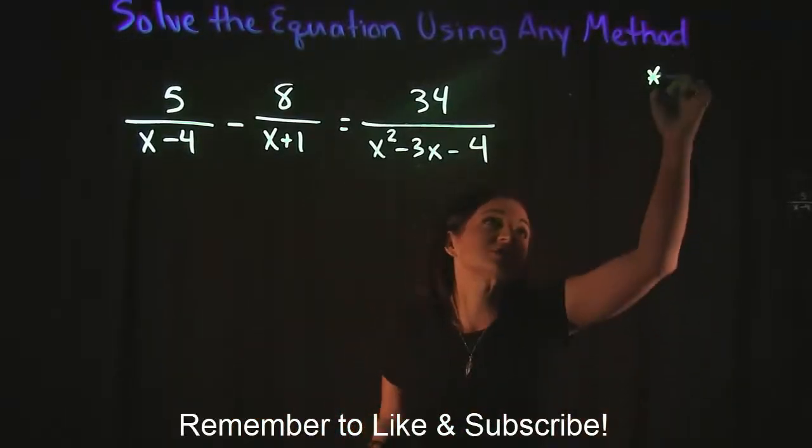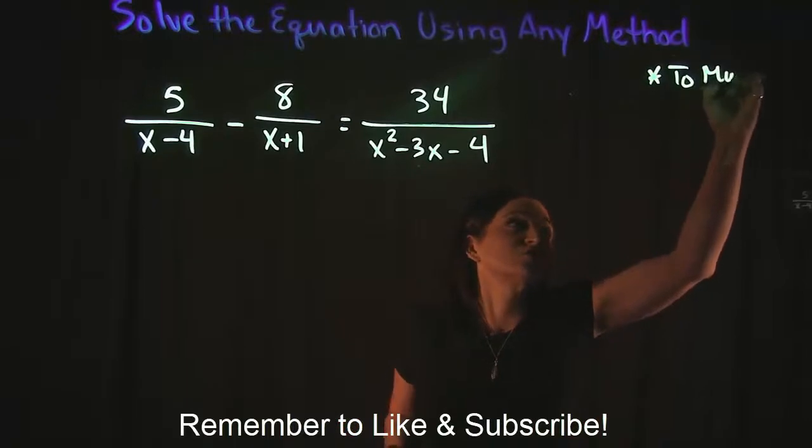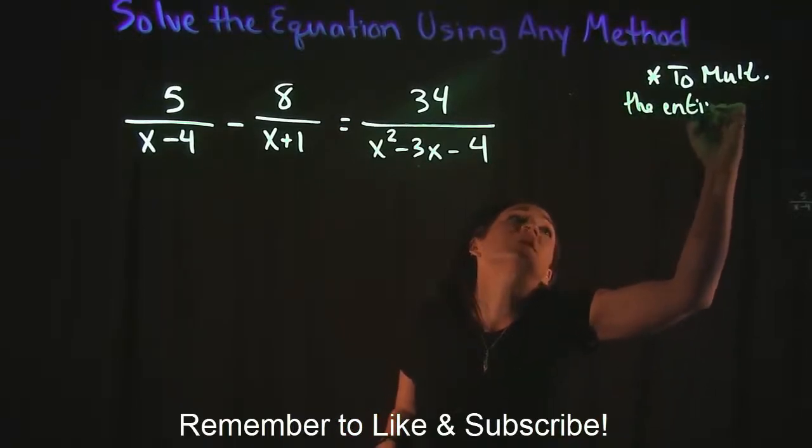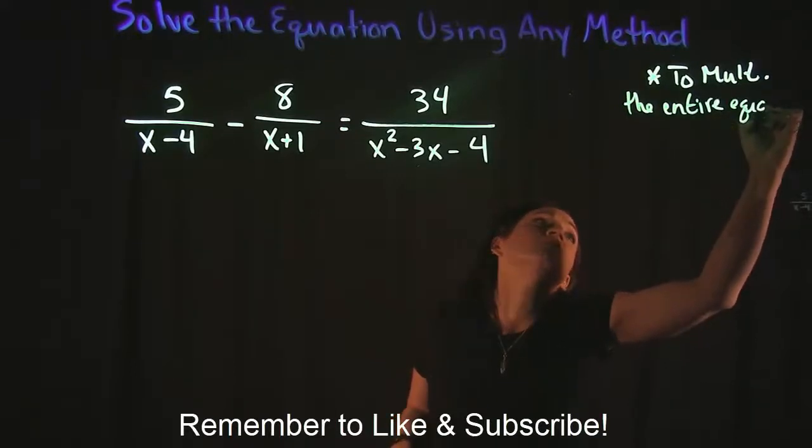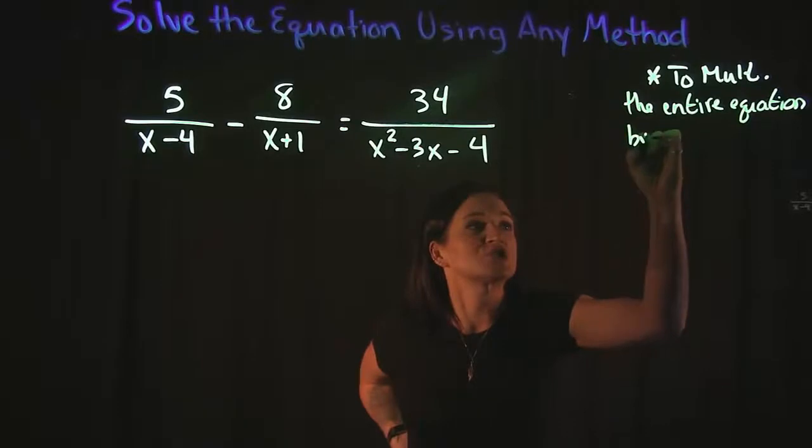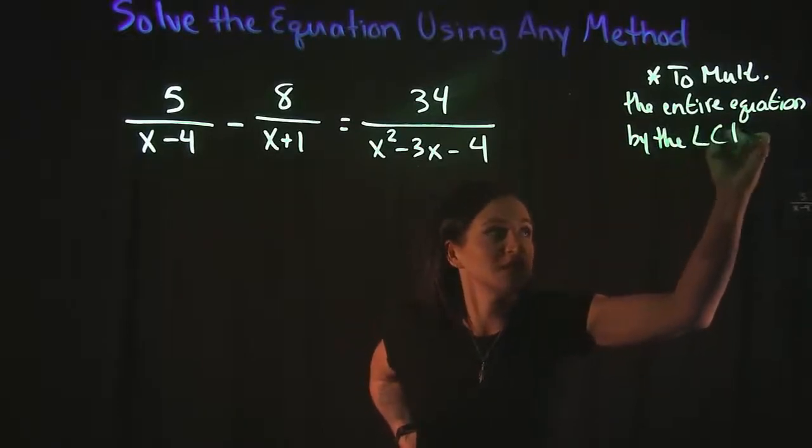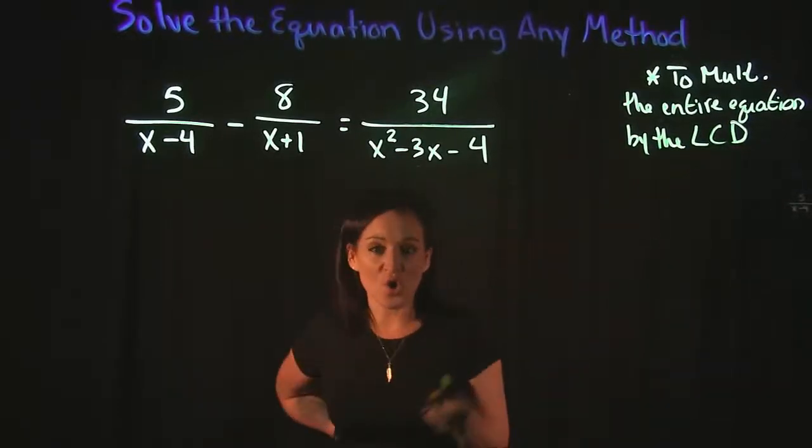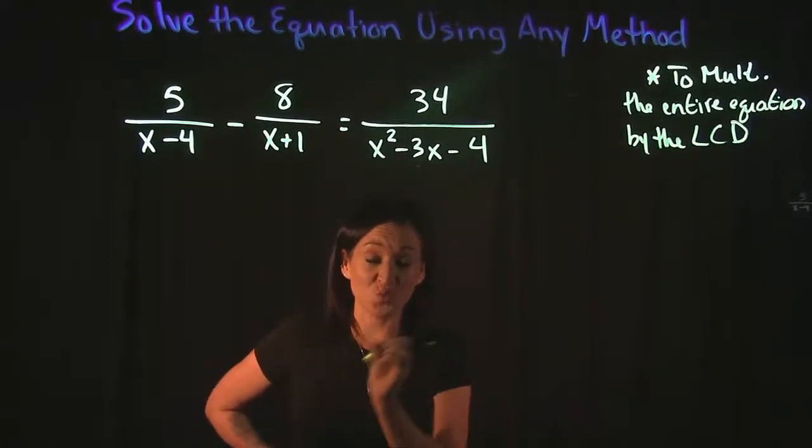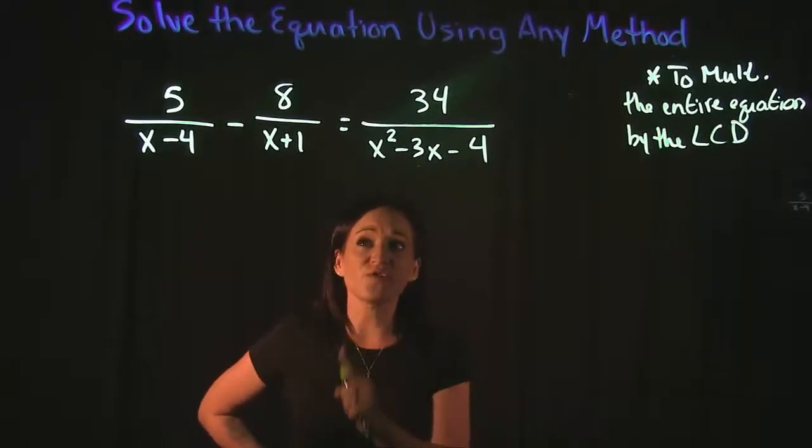Now there's one step in order to clear fractions, and that is to multiply the entire equation. So every term that we have in the equation, we want to multiply the entire equation by the LCD, so by the lowest common denominator. Now that means we need to find what the lowest common denominator of this problem is.